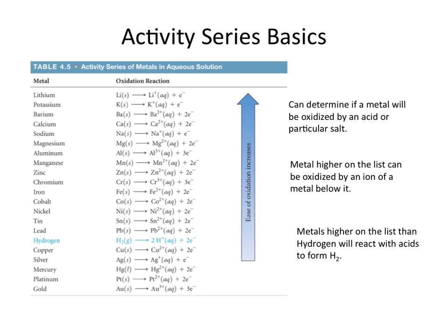Basically what this table tells us is how readily or how easily that specific metal is oxidized. So the metals that are at the top of the list are the most easily oxidized, and the metals at the bottom of the list are the least easily oxidized.